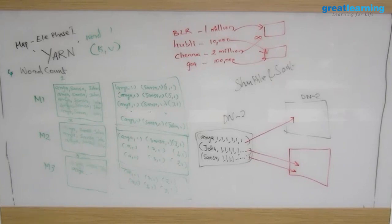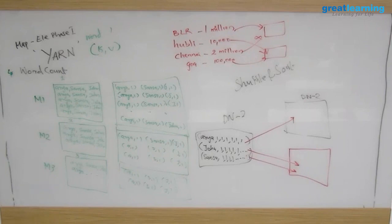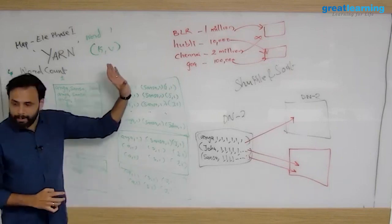Once you write a MapReduce program it's very difficult to modify it. In the real world, if a program is already running, nobody will allow you to modify it — you'd have to stop the process, write a new one, and that's not allowed. So you optimize it while writing so there's no problem later.